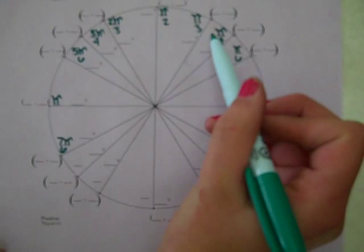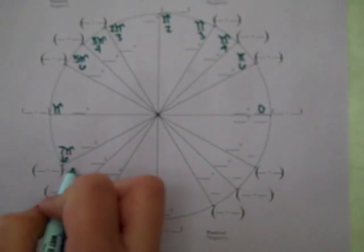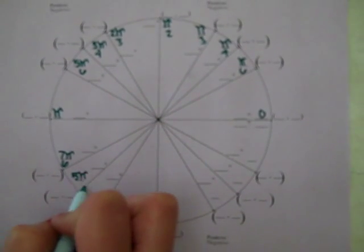π over 4 would be 1 plus 4 is 5. So 5π over 4.